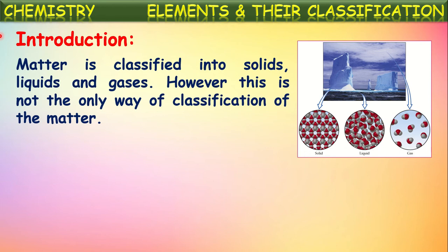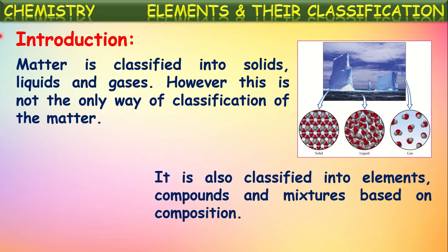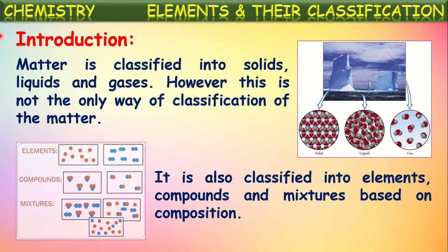However, this is not the only way of classification of matter. Matter is also classified into compounds and mixtures based upon the composition. Not only based upon the arrangement of particles, matter is also classified based upon the chemical composition — into pure and impure substances, that is elements, compounds and mixtures.